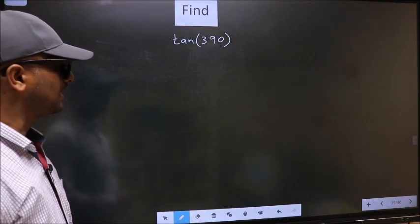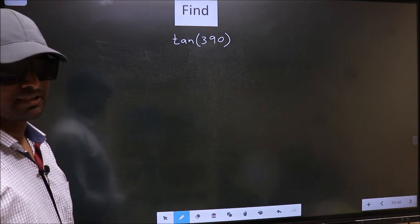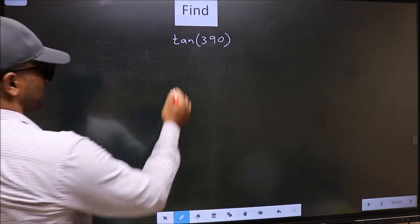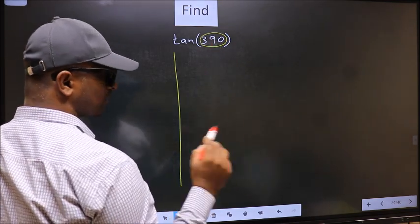To find tan 390°, we should follow this method. See here we have 390°. Now you should check 390° lies between which two multiples of 180.